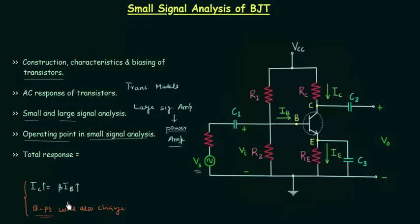We do not have to worry about this condition because it arises in large signal analysis. In small signal analysis, Vs is small so IB will not change much, and hence IC will also remain constant and the operating point will not shift. We can define a small signal as the signal having magnitude sufficiently small to keep the transistor in the active region.